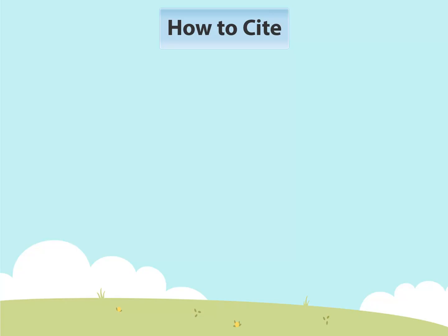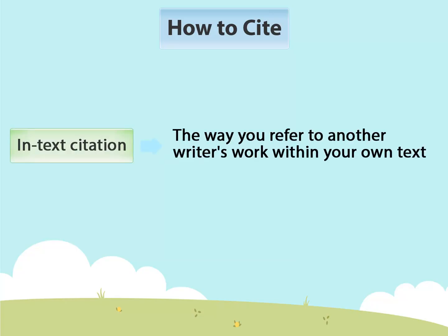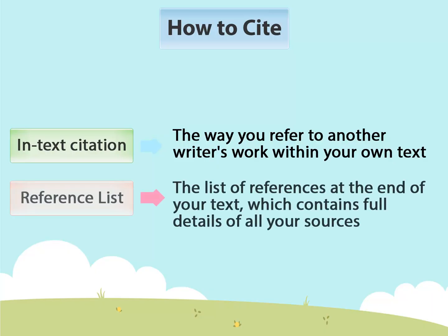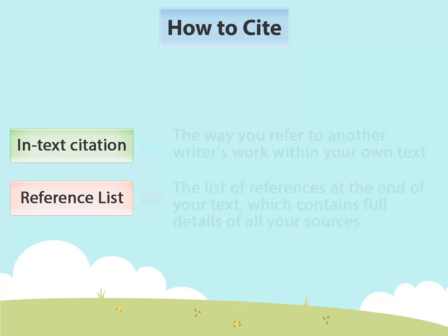In order to make proper citations, you need to make an in-text citation and you must also include a complete list of sources at the end of your paper. This is called a reference list.